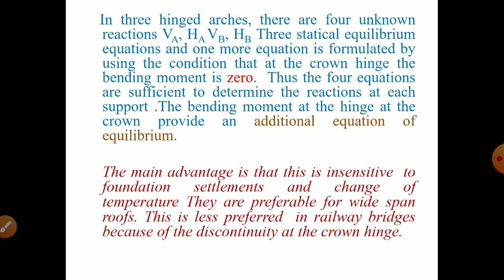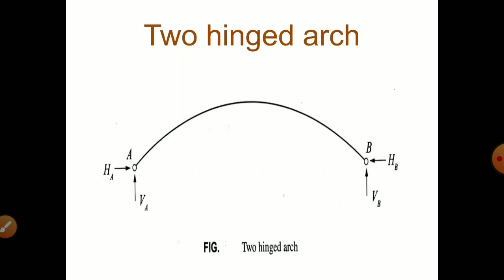The main advantage is that this is insensitive to foundation settlements and change of temperature. They are preferable for wide span roofs. This is less preferred in case of railway bridges because of the discontinuity at the crown hinge.